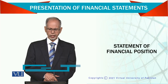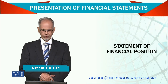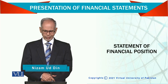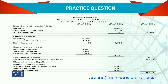Bismillahir Rahmanir Raheem. Statement of financial position — the name of the company, the name of the statement, and the period that is on such and such a date. Then we have numbers in thousands — that is the rounding.